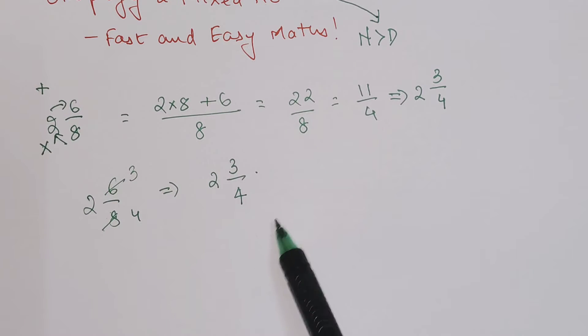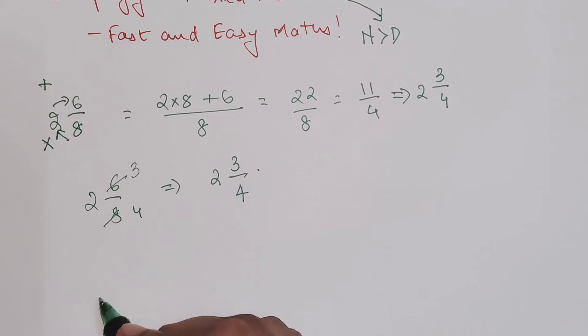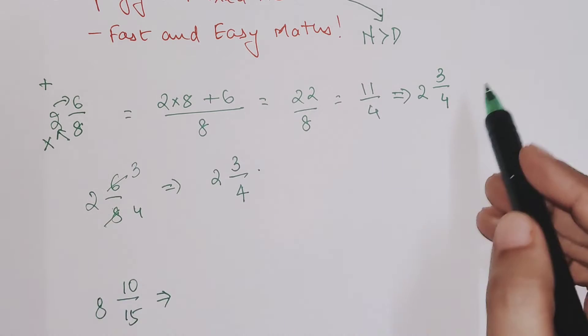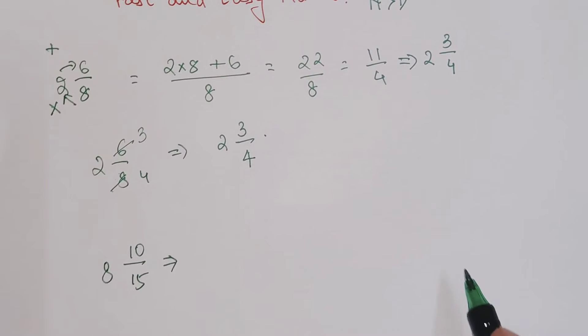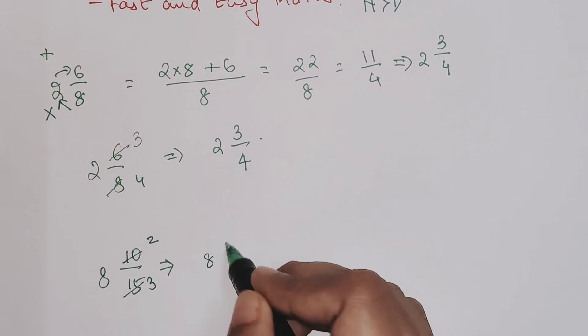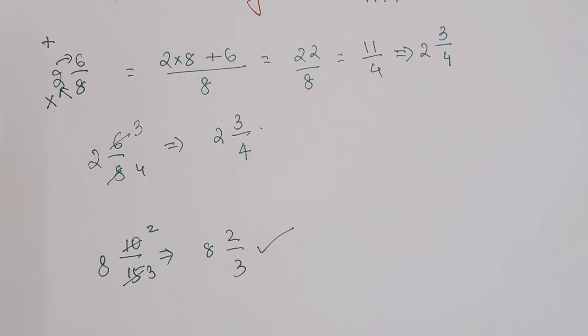Now very quickly let's try and understand a few more examples. 8 10/15 - you do not have to go through all of these processes. All you have to do is just cancel this, so you will get 8 2/3, and that is your simplified form for this particular mixed number.